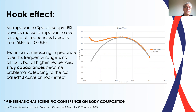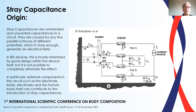However, bioimpedance spectroscopy devices can measure impedance over a range of frequencies, and technically measuring impedance over these frequencies is not difficult, but at higher frequencies, stray capacitances become problematic, leading to the so-called J-curve or hook effect. Stray capacitances are unintended and unwanted capacitances in the circuit, caused by any two parallel surfaces at different potentials which, if close enough, generate an electric field. In BIS devices, this is mostly minimised by good design within the device itself, but it is not possible to completely eliminate the effect. In particular, external components such as the electrode leads, electrodes, and the human body itself can contribute to the introduction of stray capacitances.